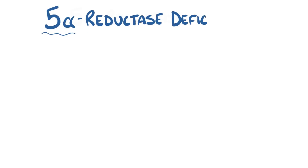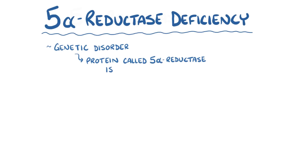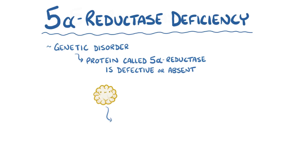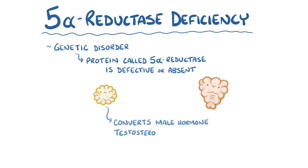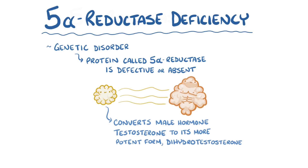5-alpha reductase deficiency is a genetic disorder in which a protein called 5-alpha reductase is defective or absent. 5-alpha reductase is an enzyme that converts the male hormone testosterone to its more potent form, called dihydrotestosterone. One of the most important roles of dihydrotestosterone is to help male external genitalia develop in a male fetus.